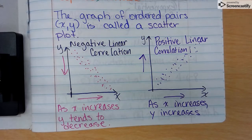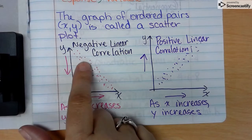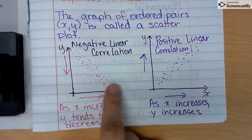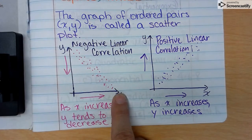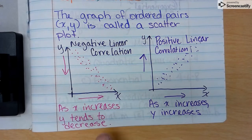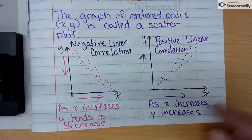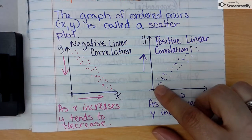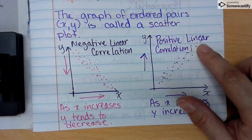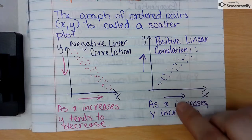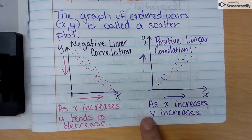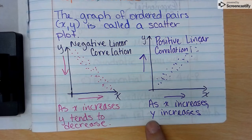There are several versions of a scatterplot. When the dots appear to be falling as you go from left to right, that is a negative linear correlation - as x increases, y tends to decrease. If the dots appear to be increasing going up as you go from left to right, that is a positive linear correlation - as x increases, y increases.